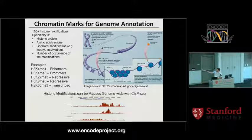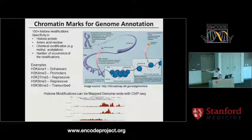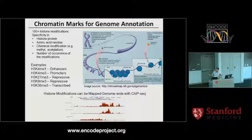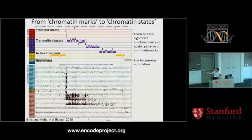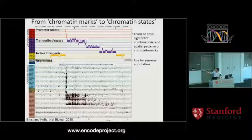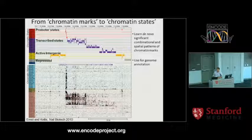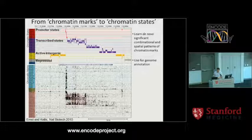As we've heard throughout the workshop about histone modifications that ENCODE has generated, there are multiple different types in terms of the histone protein, amino acid residue, and the chemical modifications. Each modification can give you some indication of what type of genomic entities are active or repressed in different cell types. There's more than one mark being mapped in any given cell type, and by integrating multiple different tracks and reasoning about their combinatorial and spatial patterns, we can give a systematic annotation to the genome — both discovering the patterns and assigning each location to an instance of some pattern. We termed this chromatin states.